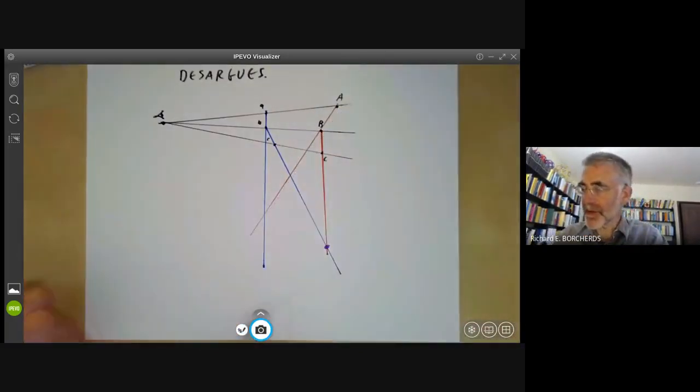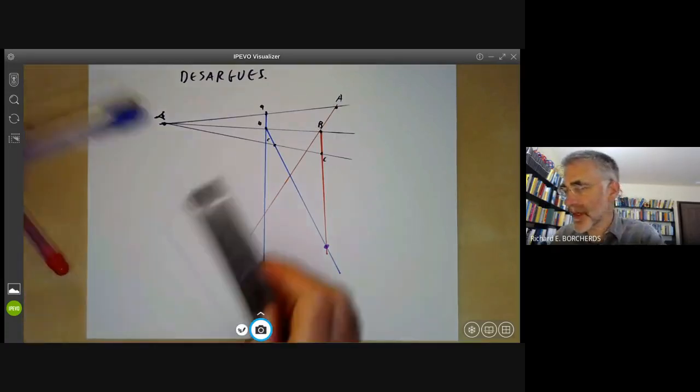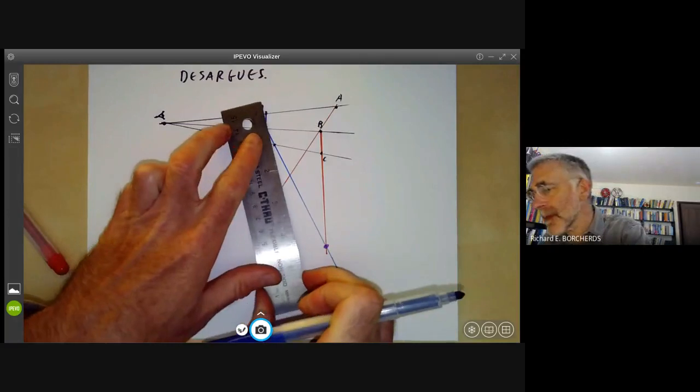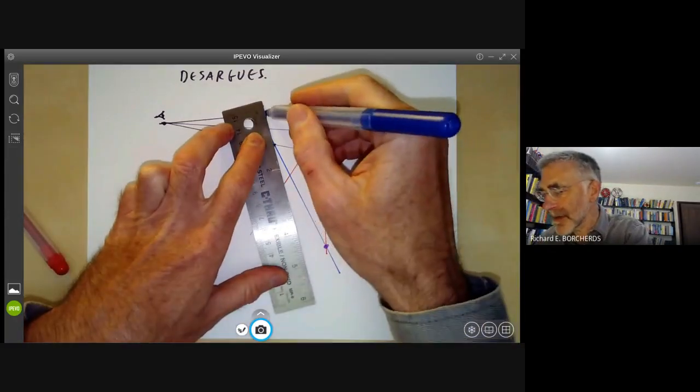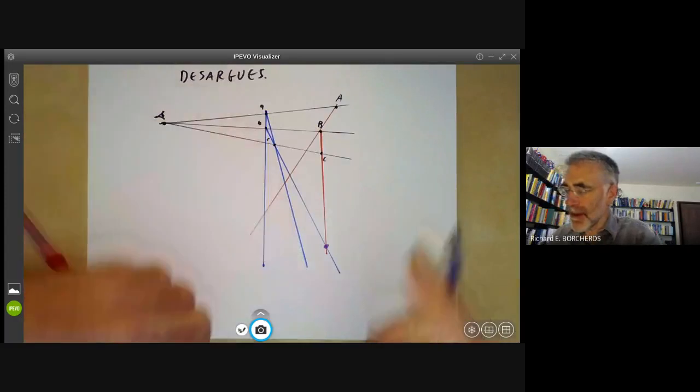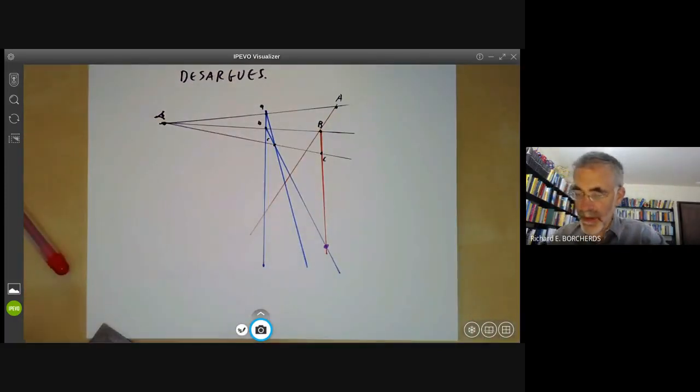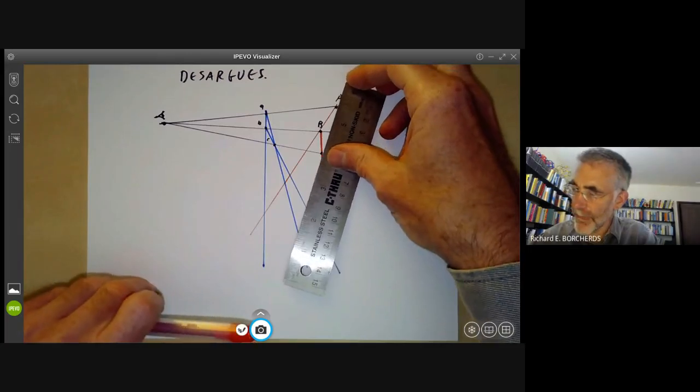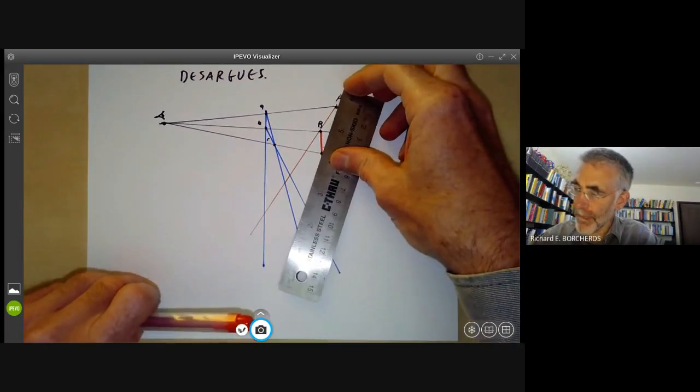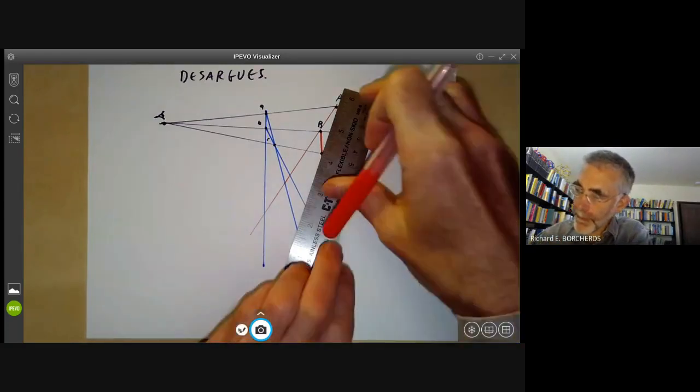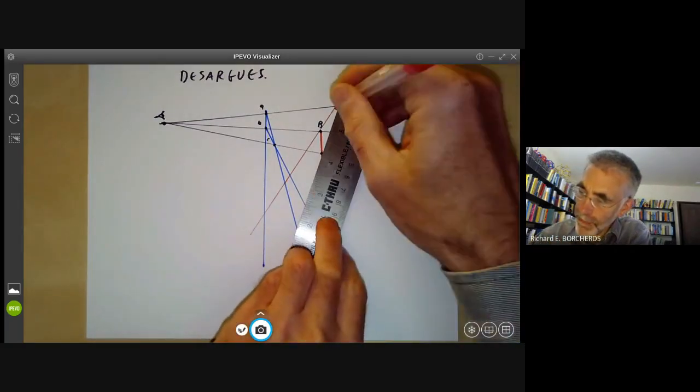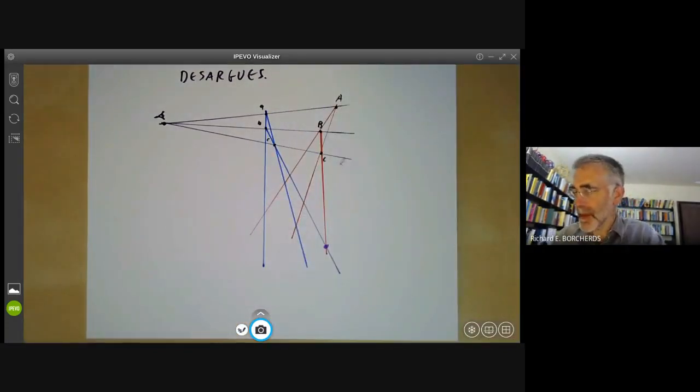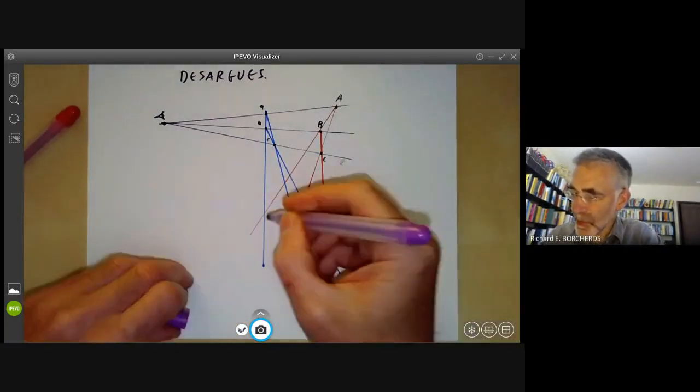And finally we do the same thing for the third side joining A and C. So we've got an AC side going down here. So we've got three points here.